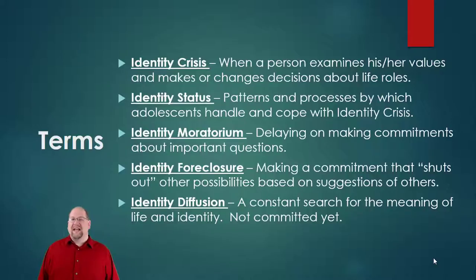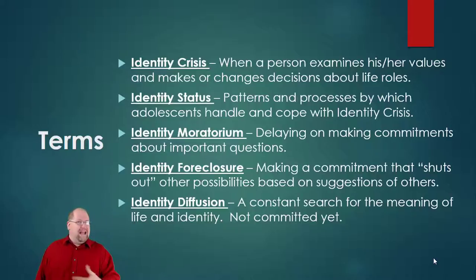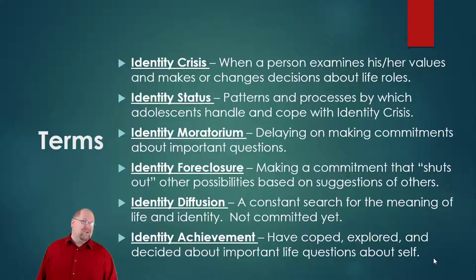Identity diffusion is when you are still in a constant search for the meaning of life and your identity. You have not committed yet — you're still searching, trying to figure things out. You have all these different options available to you, but you haven't made a choice yet. And then finally, identity achievement is where you have coped, explored, and decided about the important questions of life and about yourself. You've figured out who you are, what you're about, and the type of person you want to be going forward.